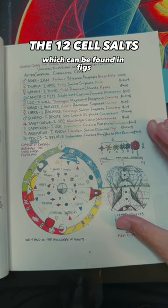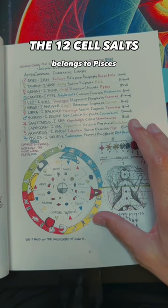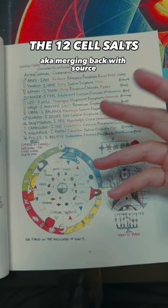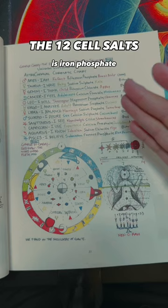Last but not least, February 19th to March 20th belongs to Pisces, which is the feet and represents submission. As we submit our souls back to God, aka merging back with source, and the corresponding cell salt to Pisces is iron phosphate, which can be found in blueberries.